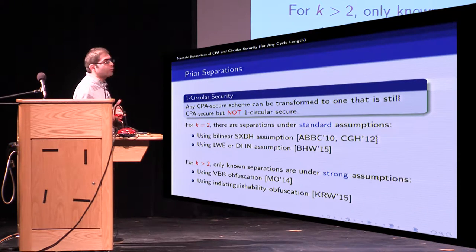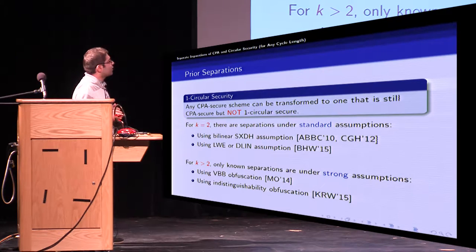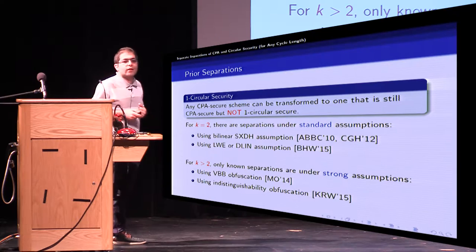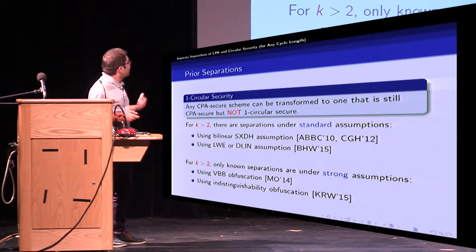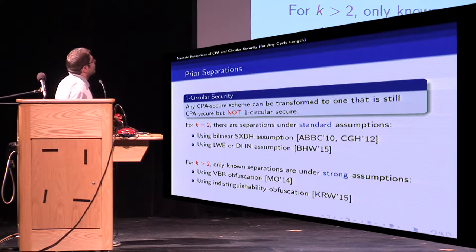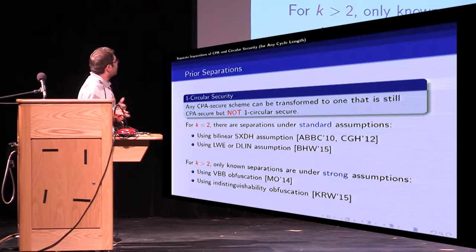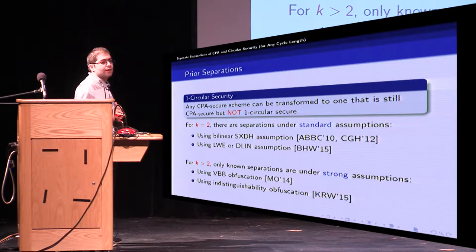And then despite good progress for K equals 2, only known separations for K greater than two are based on somewhat strong obfuscation assumptions. One uses virtual black box obfuscation which later they refined their scheme to rely on IO and one uses indistinguishability obfuscation.